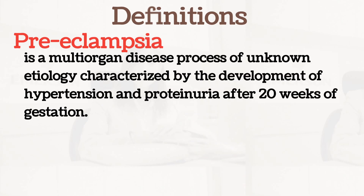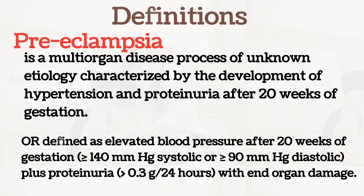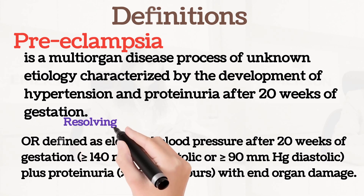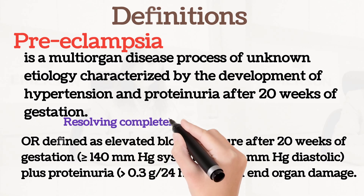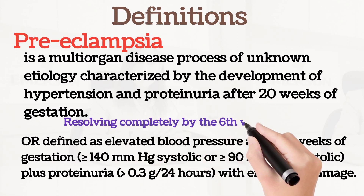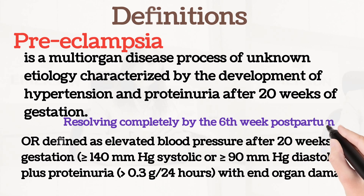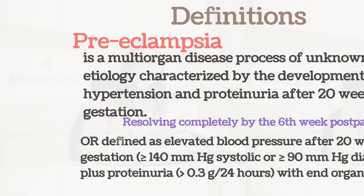Pre-eclampsia can be defined as a multi-organ disease process of unknown etiology, characterized by the development of hypertension and proteinuria after 20 weeks of gestation, or defined as elevated blood pressure after 20 weeks of gestation with end-organ damage, and should resolve completely by the sixth week postpartum. More details will be available in part two of this video, which will cover pre-eclampsia entirely.